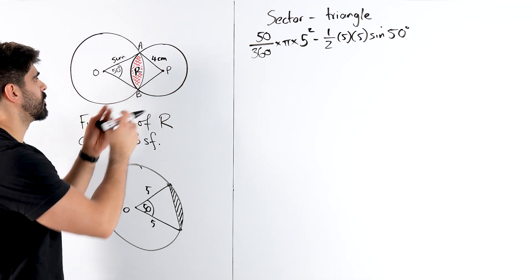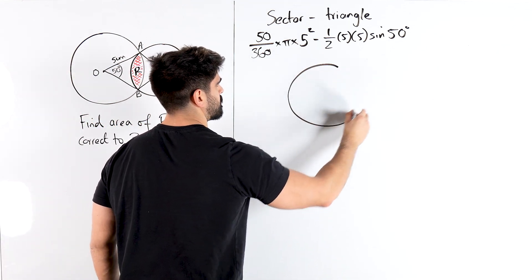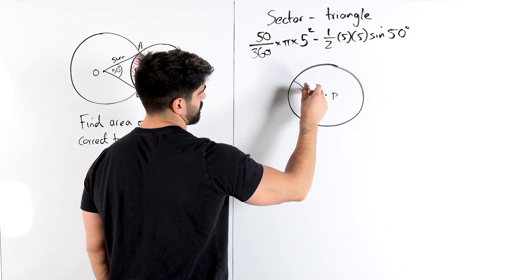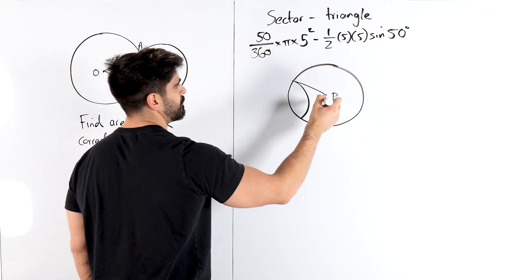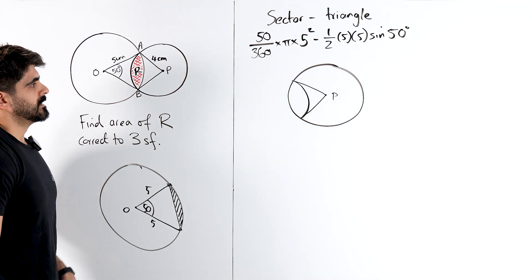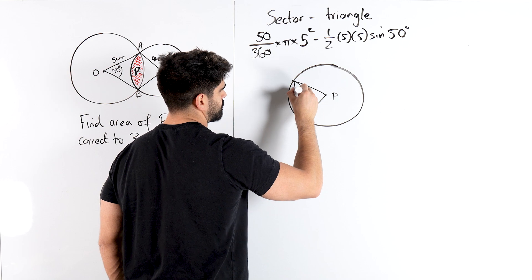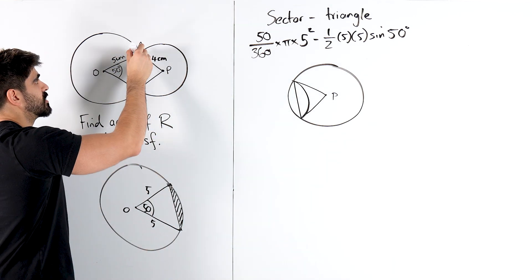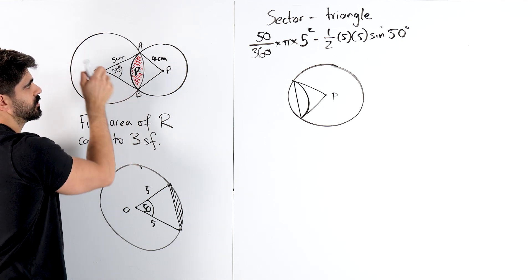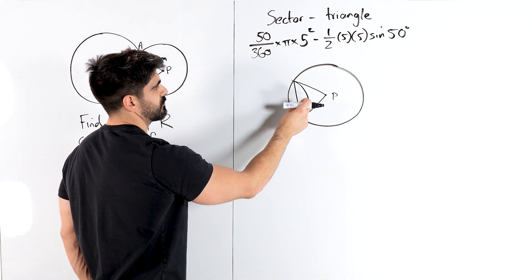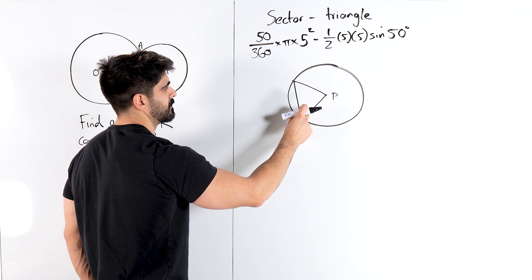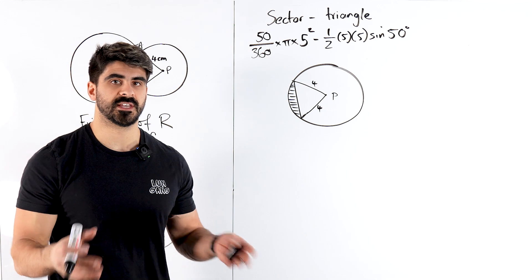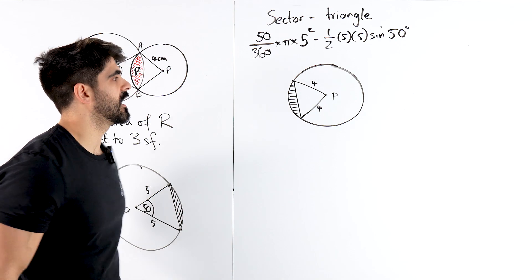Now we've got to focus on the other circle. We've got the region R shared on both of them. We form that chord again. Remember, the right side is to do with the large circle and the left side is to do with the small circle. We've already calculated the right part. Now we're trying to work out this segment for the small circle with radius four. What's missing that we had before? It's the angle. I need to know what this angle is — I don't know what it is.